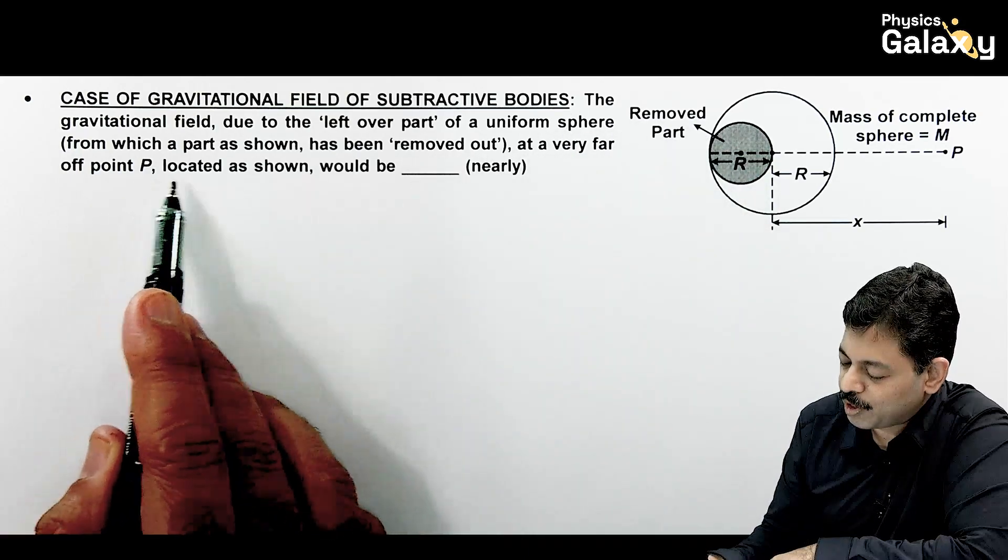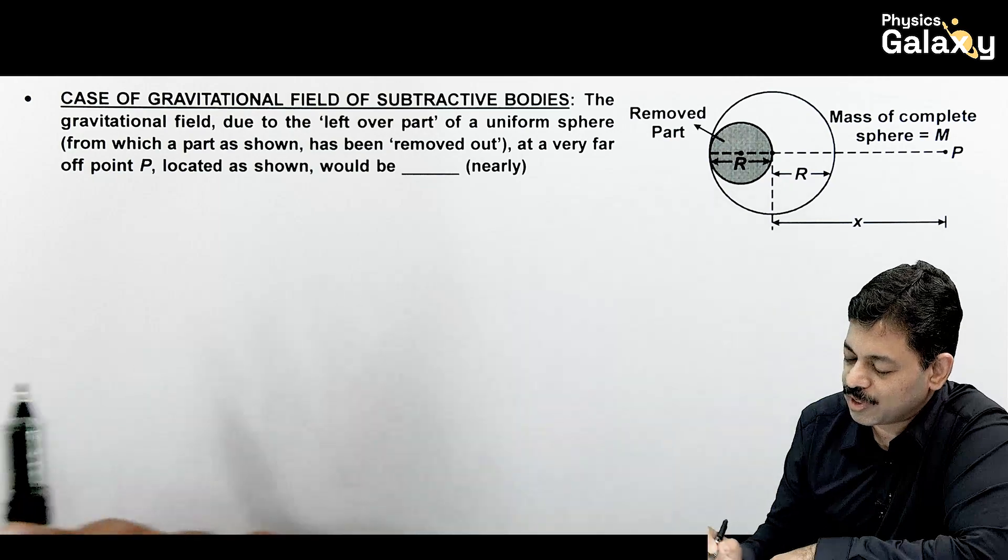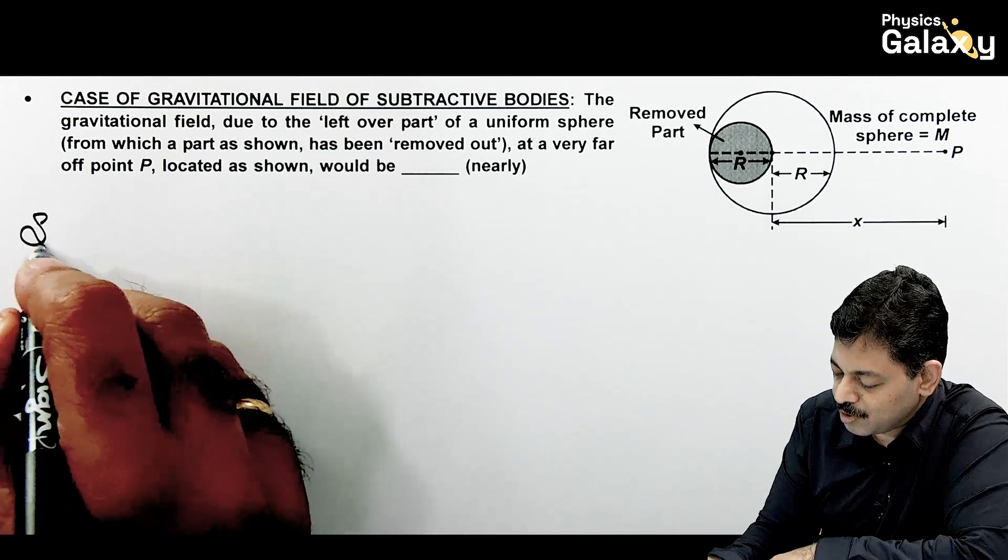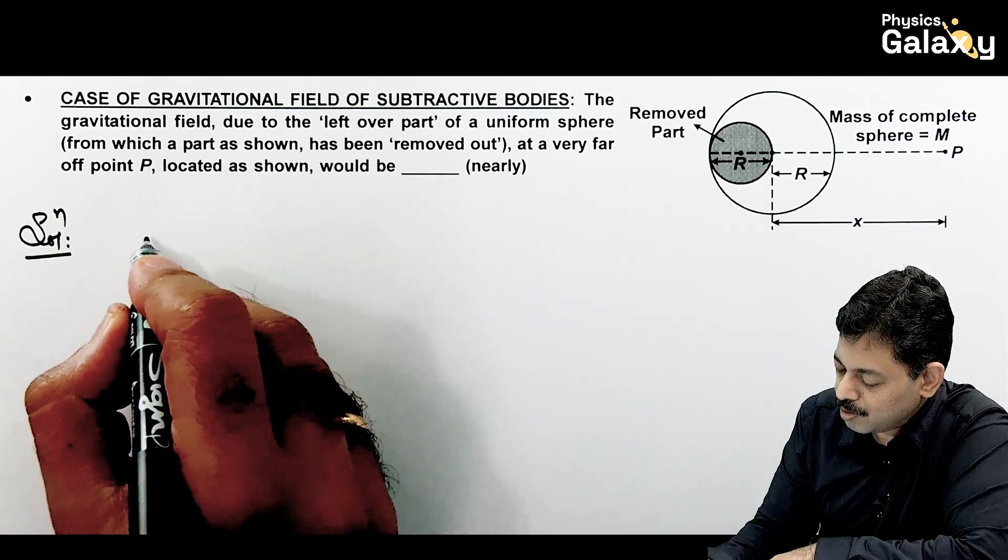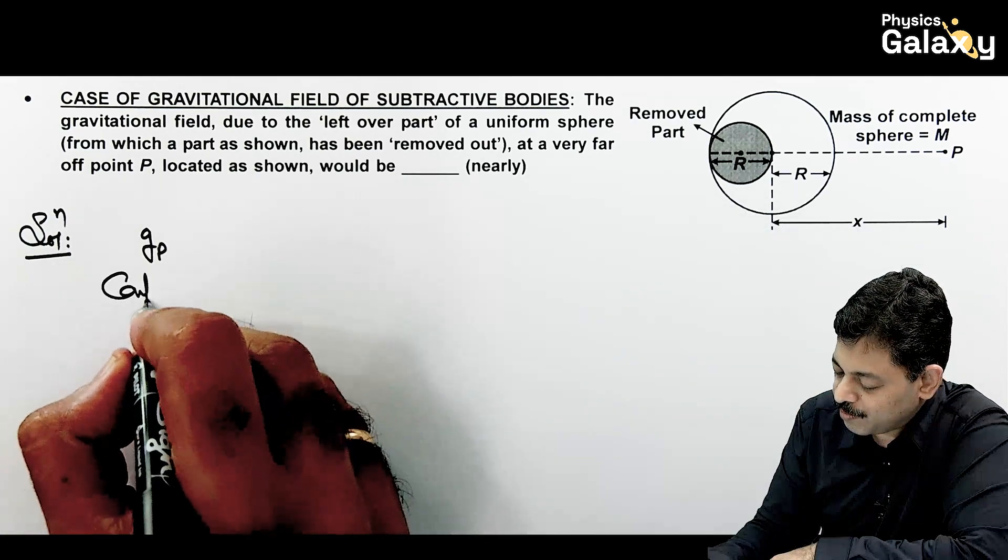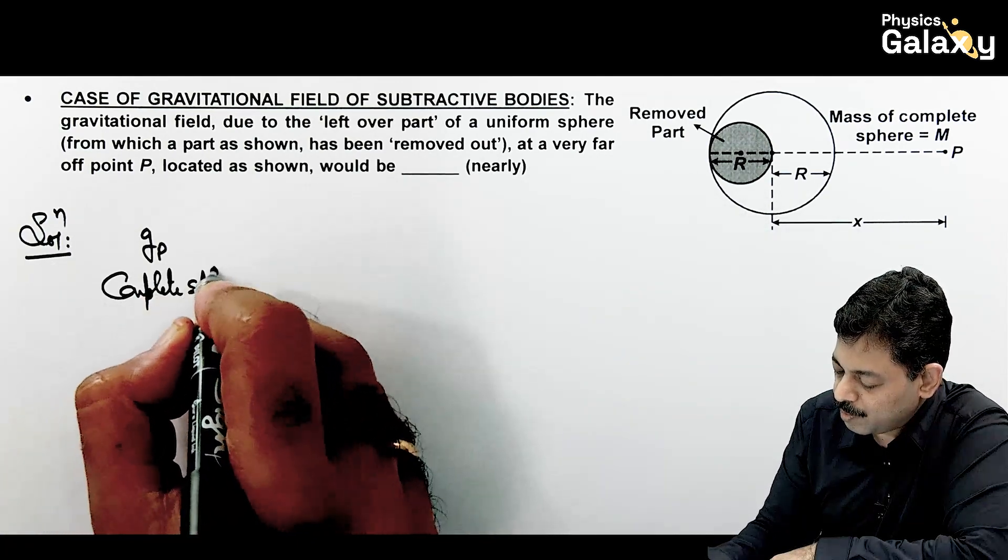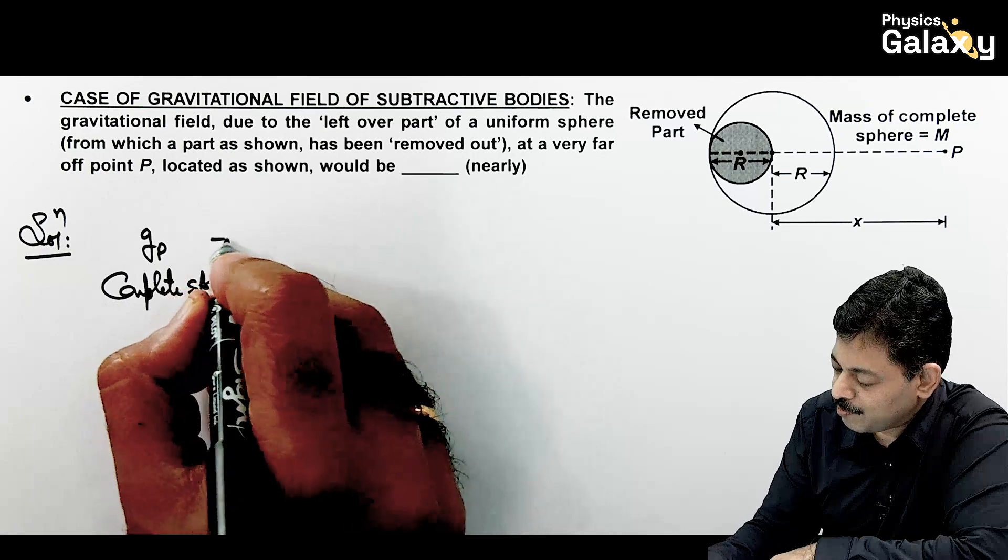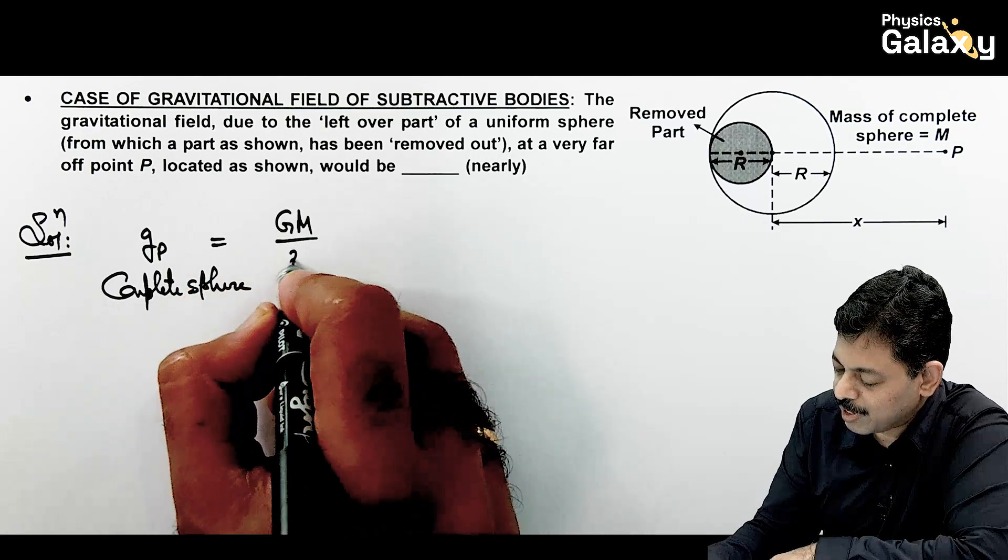And it is saying, at a very far off point P, located as shown, we need to check the gravitational field. So in this situation we can say, g at point P, due to the complete sphere, or complete sphere, because of gravitational field, this is given by GM by X squared.